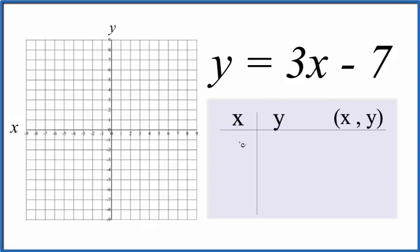I like to start out with 0 for x. Let's just put a 0. 3 times 0, that's just 0. Then we'd have negative 7 for y.